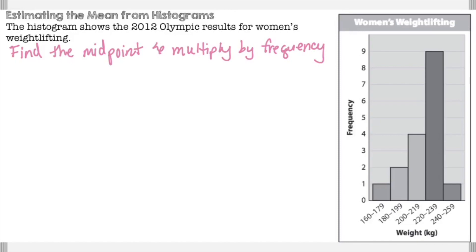The midpoint is the middle of that range. 160 to 179, we have to find where the middle of that number is. Essentially, it's the median. Then we're going to multiply the frequency, which is how tall each bar goes. Then we'll find the mean after we get all of those and divide by how many there are.